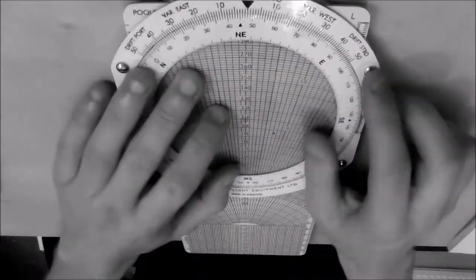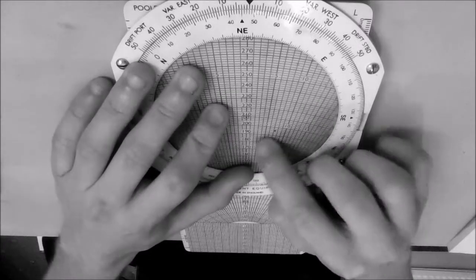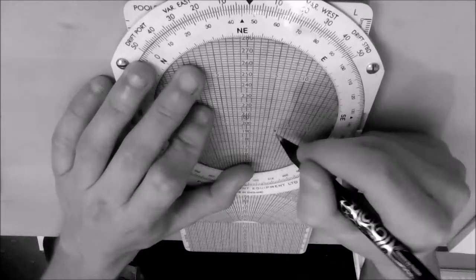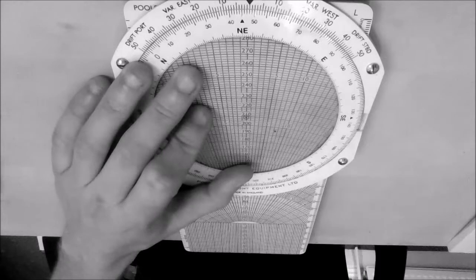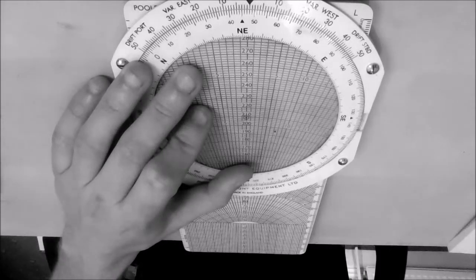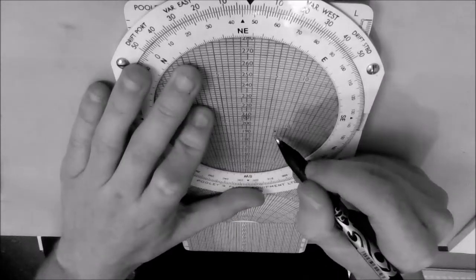And then all you have to do is go along to where our mark sits there, which as you can see is 8 degrees right. So we know that our drift is 8 degrees right and that our ground speed is 196.